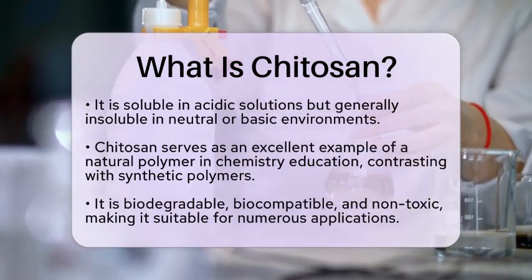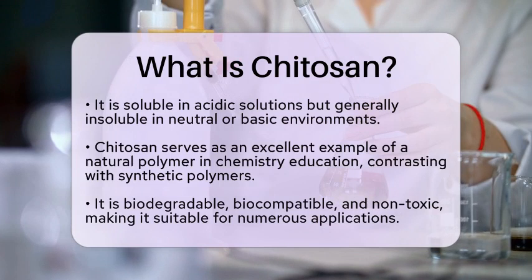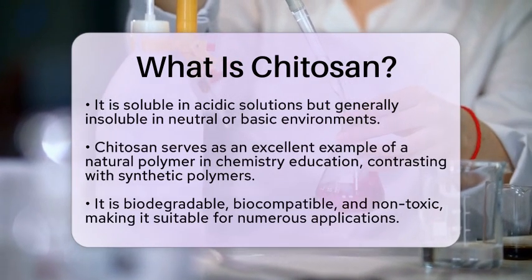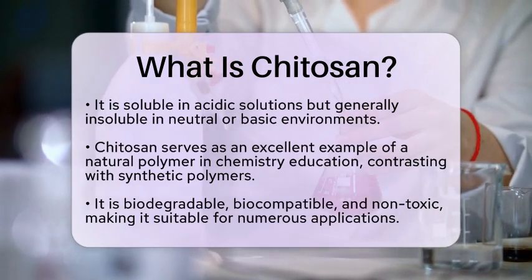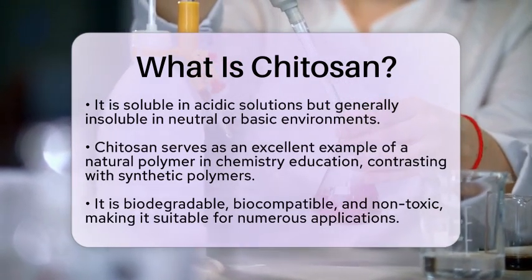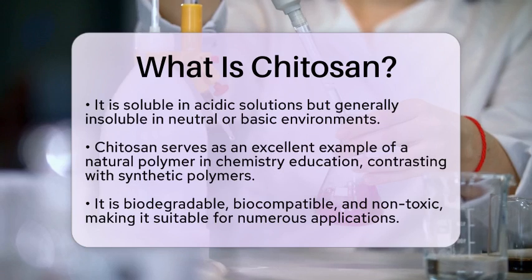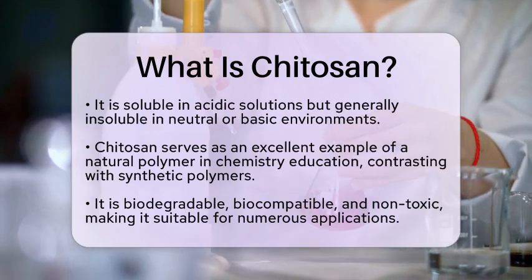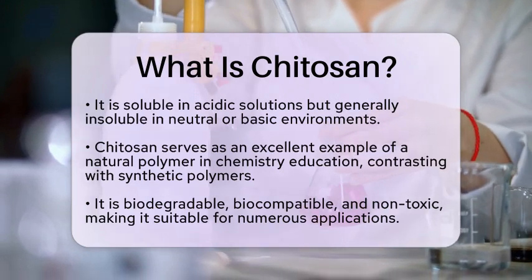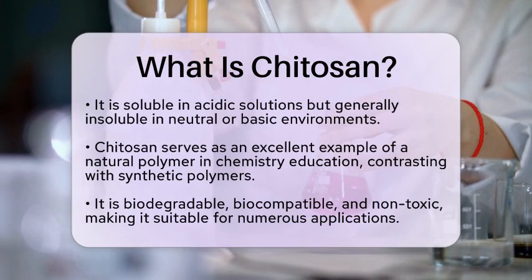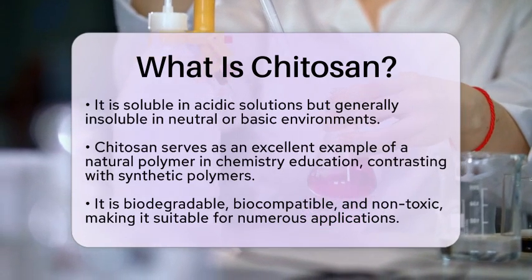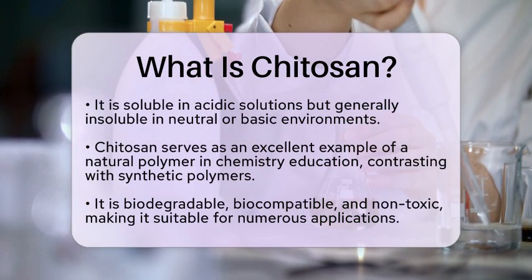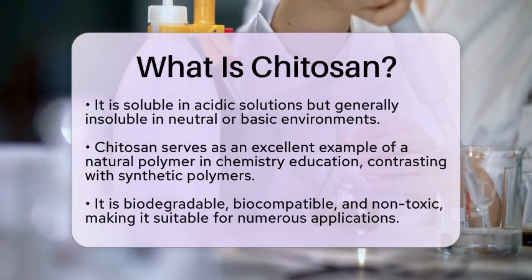From a chemistry education perspective, chitosan serves as an excellent example of a natural polymer. It contrasts with synthetic polymers, which are man-made and often derived from petroleum. Chitosan is biodegradable, biocompatible, and non-toxic, making it suitable for many applications.